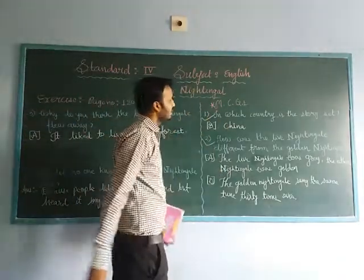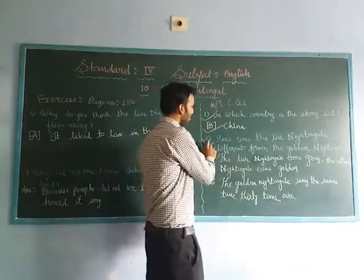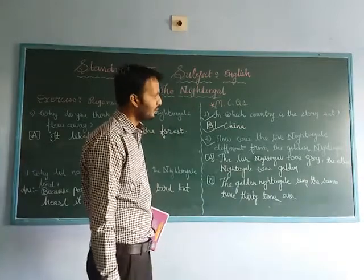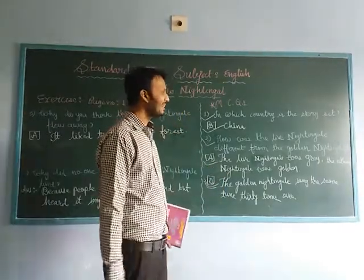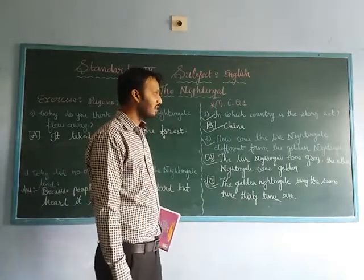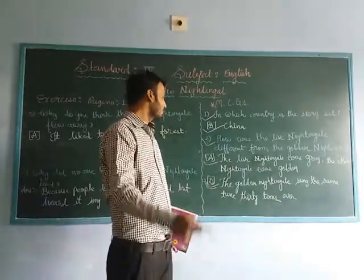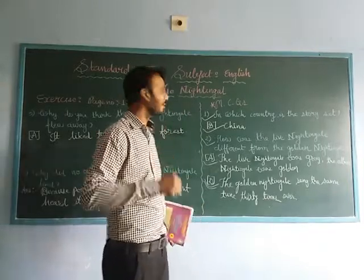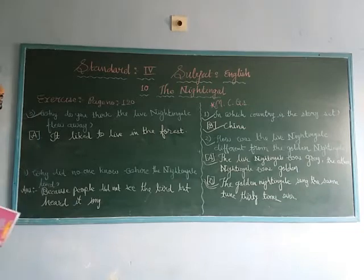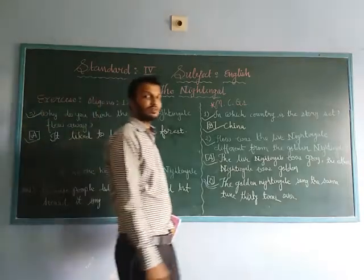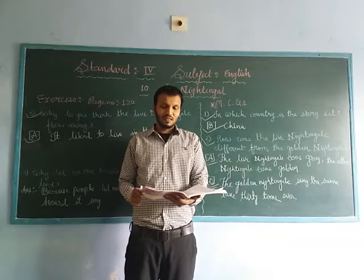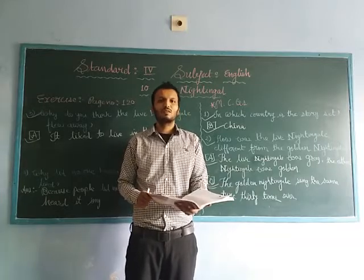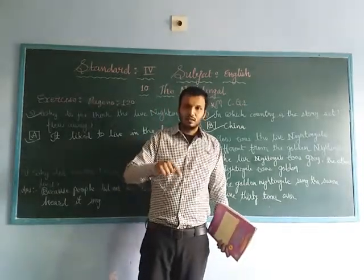Again, let's see. First number: in which country the story is set — answer is B number, China. Second number: how was the light nightingale different from the golden nightingale — answer is A number and B number. A number: the light nightingale was grey; B number: the golden nightingale sent the same tune 30 times away. Third number: why do you think the light nightingale flew away — answer is: eat, light, to live in the forest. Here in a complete way our exercise — oral questions, and the radiant answer, think and answer, and reference context — we are going to check out in the next video. Till then, just complete in your note. Thank you.